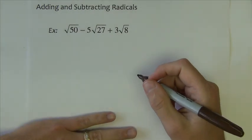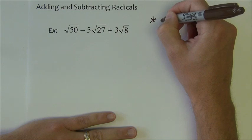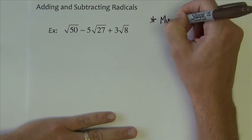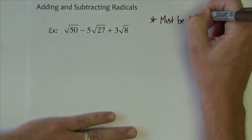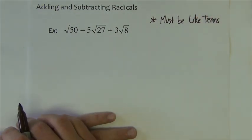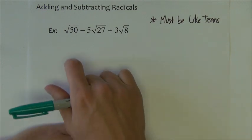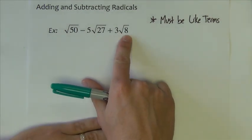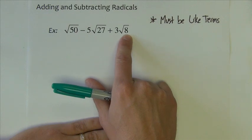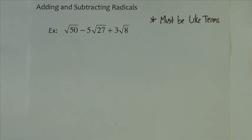Adding and subtracting radicals. When you add and subtract radicals, they must be like terms. Like terms are radicals that have the same number underneath them. So right now, looking at this problem, we cannot add or subtract these radicals. Because all the numbers underneath, the 50, the 27, and the 8, they're all different. So what I have to do first is simplify all the radicals, like we did on the last slide. So let me write all those out.